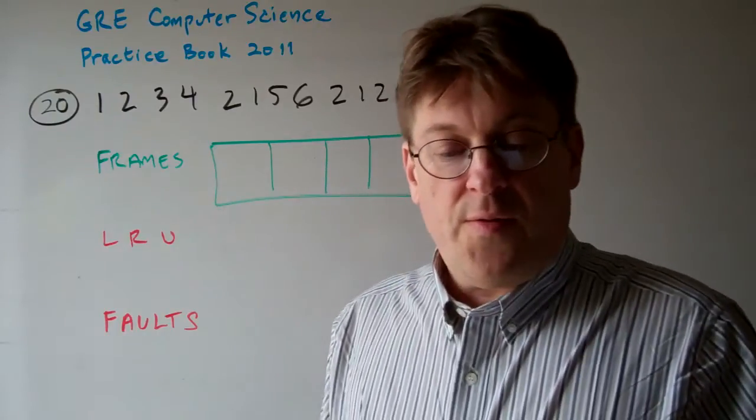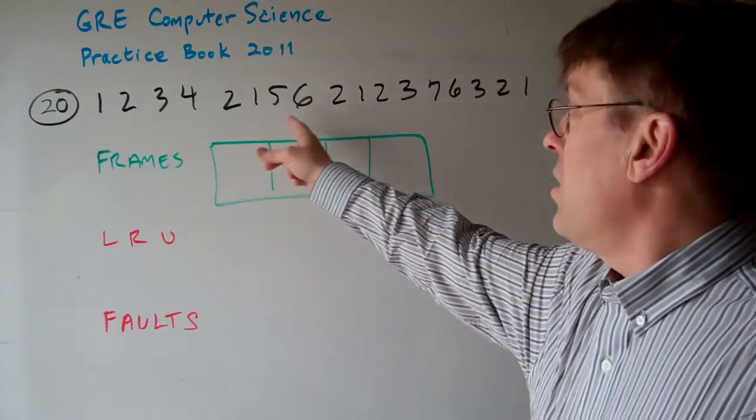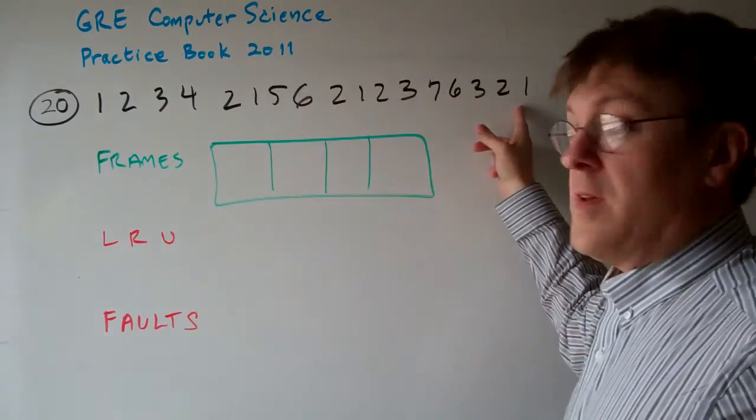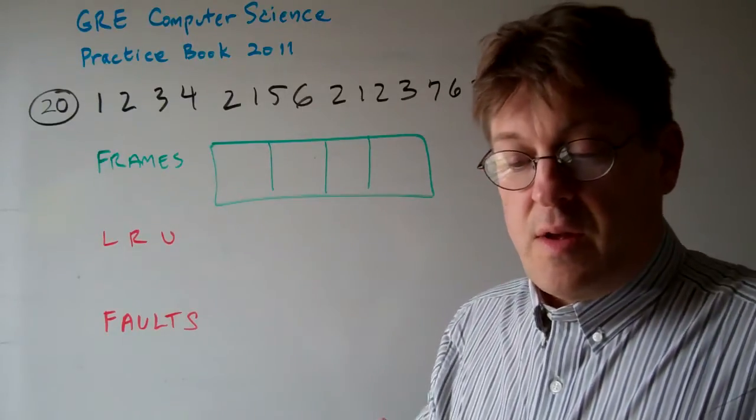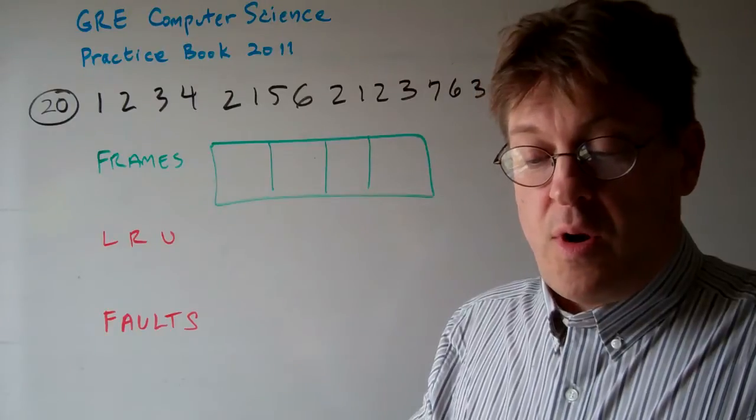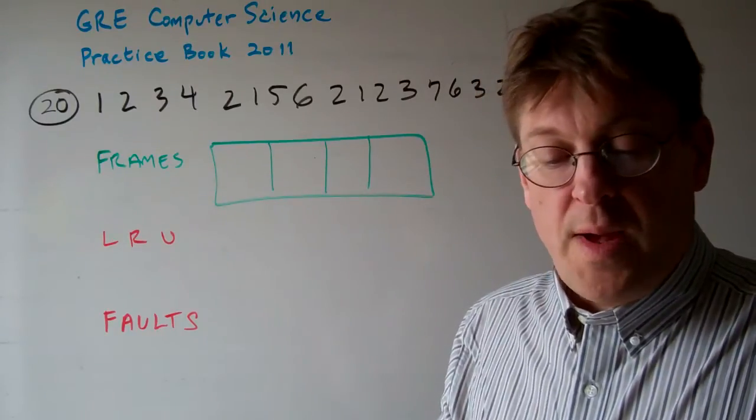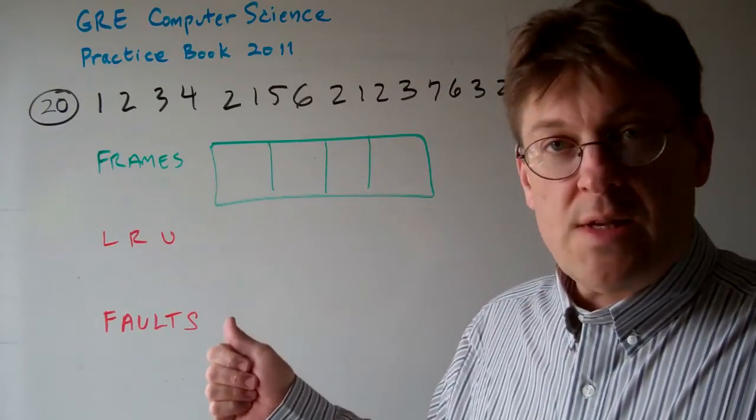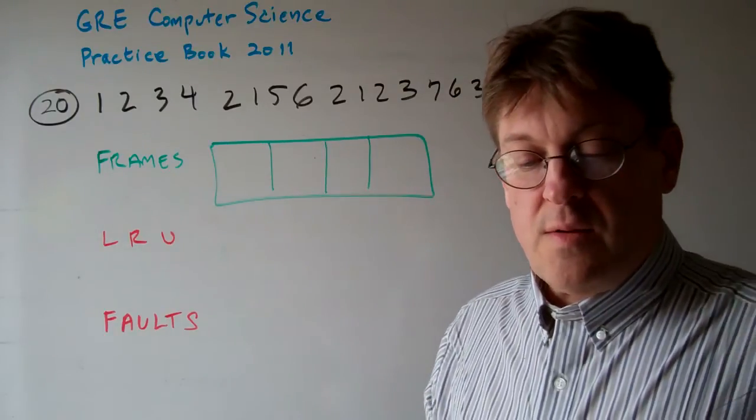Question 20. Consider the following page reference string: 1, 2, 3, 4, 2, 1, 5, 6, 2, 1, 2, 3, 7, 6, 3, 2, 1. Assuming there are four page frames available, and that all the frames are initially empty, what's the total number of page faults that would occur for the page reference string above if the least recently used LRU replacement policy is used?